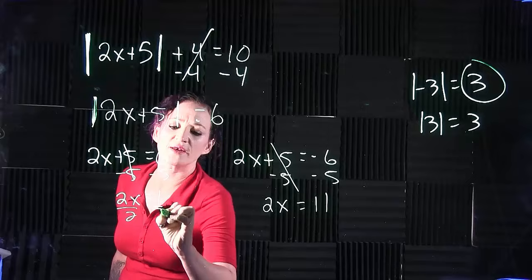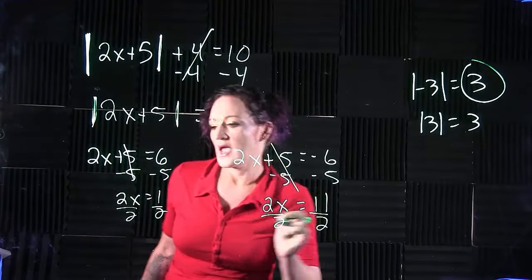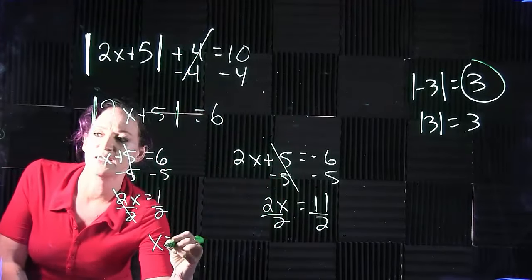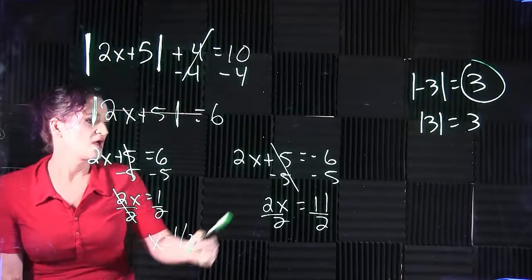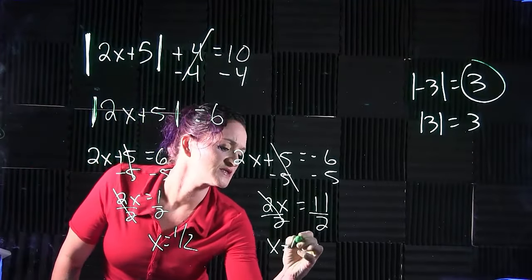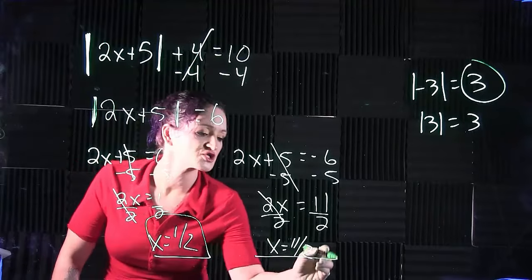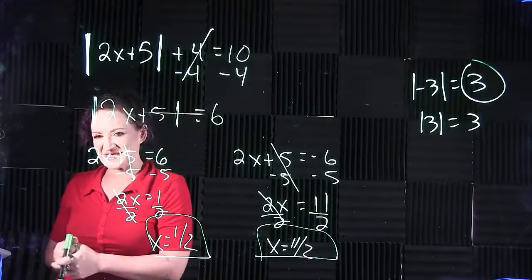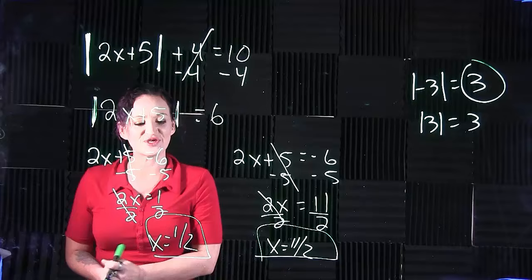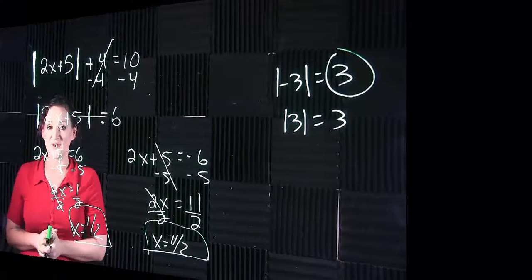Divide the 2 on each side. And we get that x is equal to 1 half, and we also get that x is equal to 11 halves. Leave them as fractions. They like fractions, not decimals. So our two solutions, 1 half and 11 halves.